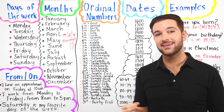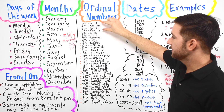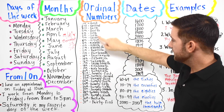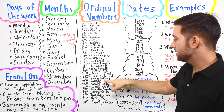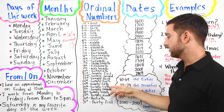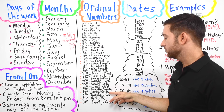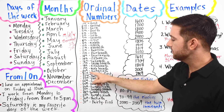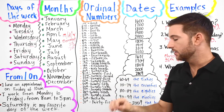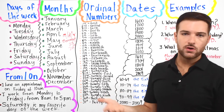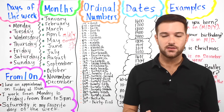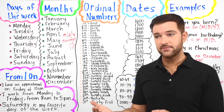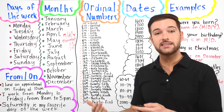Notice twentieth ends with 'eth.' Then twenty-first, twenty-second, twenty-third, twenty-fourth, twenty-fifth, twenty-sixth, twenty-seventh, twenty-eighth, twenty-ninth, and then thirtieth — also ending in 'eth,' just like twentieth. So fortieth, fiftieth, sixtieth, seventieth, eightieth, ninetieth follow the same pattern.